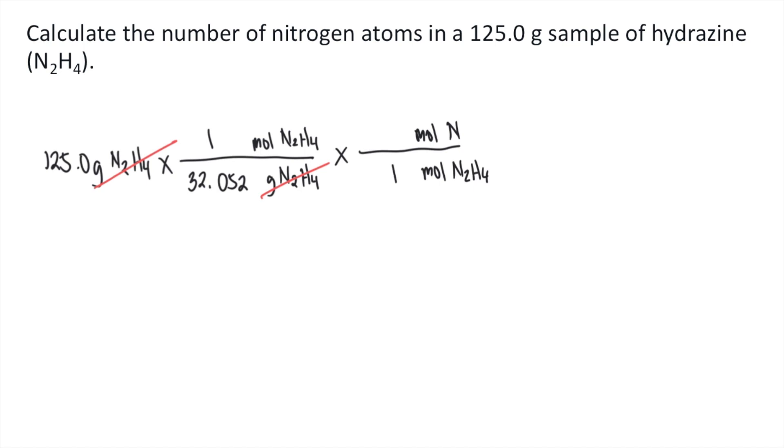So for every one mole of N2H4, there are two moles of nitrogen, because N2H4. So the moles of N2H4 will cancel out. Now you have the moles of nitrogen.